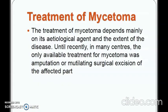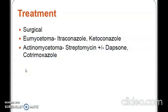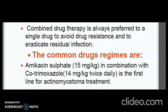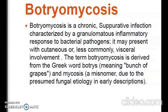The treatment of mycetoma depends mainly on its etiological agent and the extent of the disease. Until recently, the only available treatment was amputation or surgical excision of the affected part. For eumycetoma, ketoconazole can be used, and for actinomycetoma, streptomycin in combination with Dapsone or Cotrimoxazole. Combined drug therapy is always preferred to avoid drug resistance. The first-line drug regimen for actinomycetoma is amikacin sulfate in combination with Cotrimoxazole.